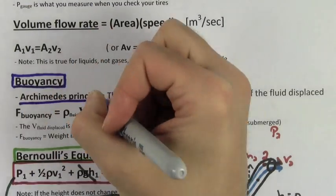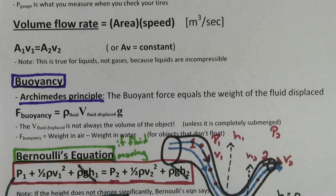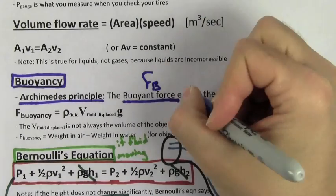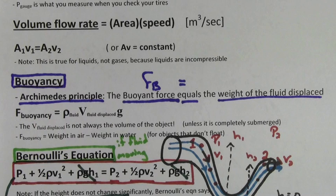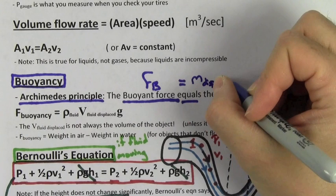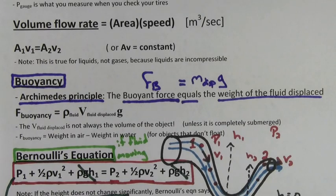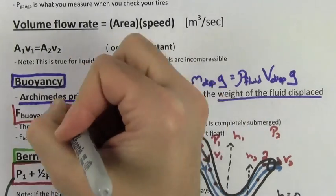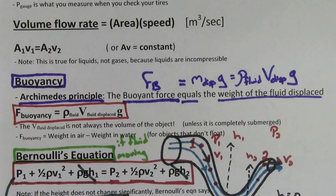You can find the buoyant force on an object by using Archimedes' principle. Archimedes' principle says that the buoyant force on an object, FB, equals the weight of the fluid displaced. Weight is defined to be m g, so the weight of the fluid displaced would just be the mass of the displaced fluid times g. You could rewrite the mass of the displaced fluid as the density of the fluid times the volume of the fluid displaced. This gives you the formula rho V g for buoyant force, which is just another way to state Archimedes' principle.